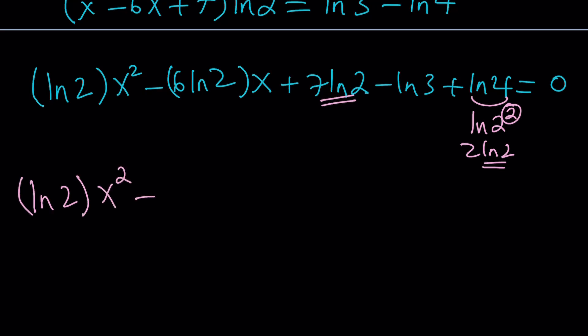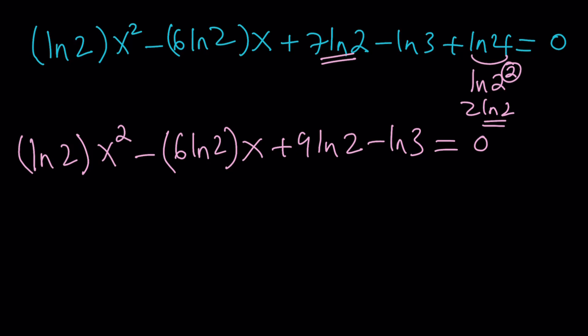So let's incorporate that: ln 2 x squared minus 6 ln 2 x and then plus 9 ln 2 by combining those two terms minus ln 3 equals 0. Great. Now let's solve this. If you didn't get why this would be quadratic take a look. This looks like ax squared plus bx plus c, doesn't it? It is quadratic in x because everything else is a constant.